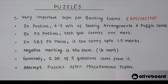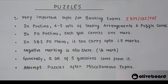In prelims, generally there are 4-5 sets of sitting arrangement and puzzles. I am categorizing sitting arrangement and puzzle into a single topic because both are very similar to each other. So in prelims level of banking examination you can definitely expect 20-25 questions on both of these topics.